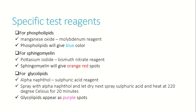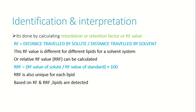For specific test reagents: phospholipids are detected using manganese oxide molybdate (phosphomolybdic acid), which generates a blue color because phospholipids contain a phosphate group. Sphingomyelin is detected with potassium iodide bismuth nitrite reagent, giving an orange-red spot. For glycolipids, which contain sugar moieties, alpha-naphthol sulfuric acid is used — similar to the Molisch test — producing a purple spot or purple ring for identification.